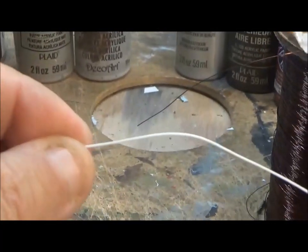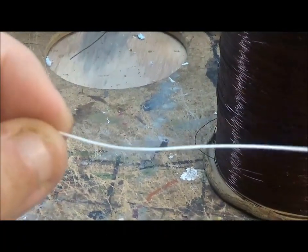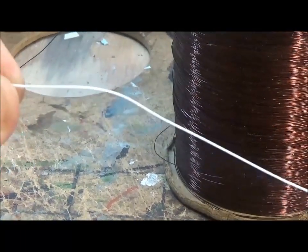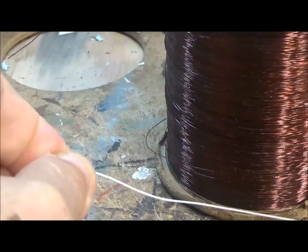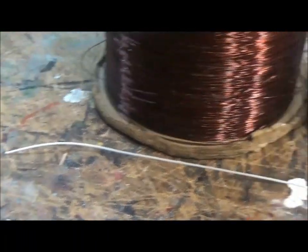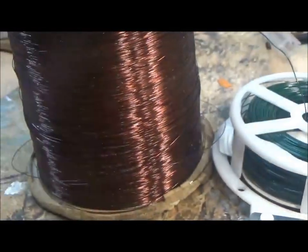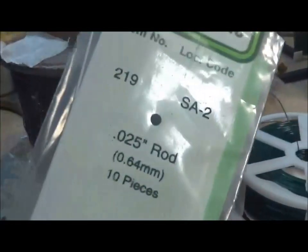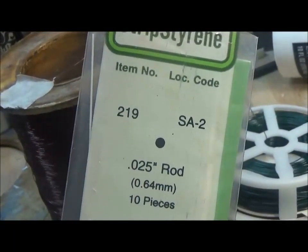Also, this stuff here is evergreen 0.025 rod, which I sort of bend. You can bend this with your fingers, or you can bend it around something that will hold its shape. I can show you what that would look like. It's number 219.